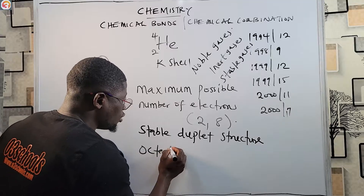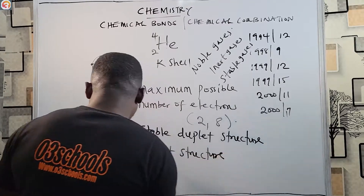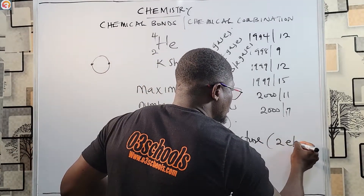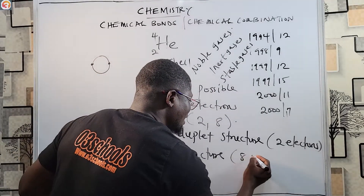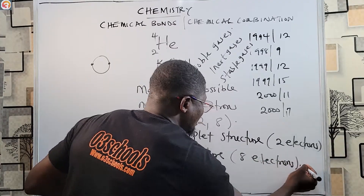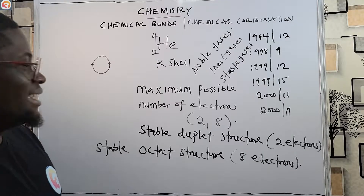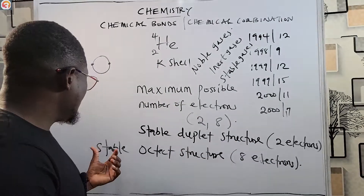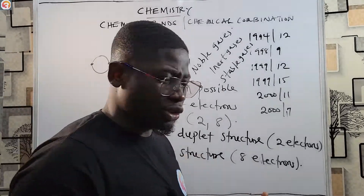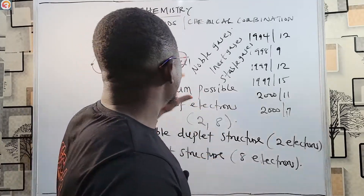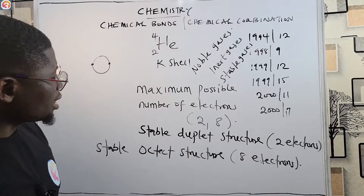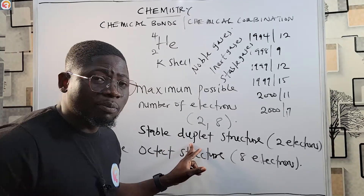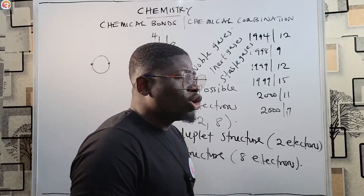When an element has eight electrons — the maximum — in its outermost shell, we say it has attained the stable octet structure. So: two electrons in the outermost shell gives the stable duplet structure, while eight electrons in the outermost shell gives the stable octet structure of electronic configuration.